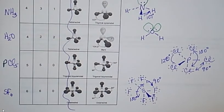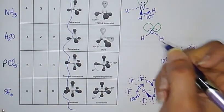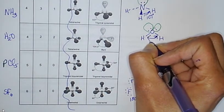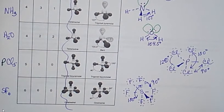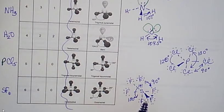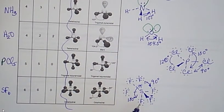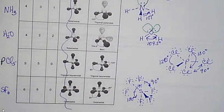Before we conclude, I want to go back and include the angle for the bent shape. For water, the angle between the two hydrogens is 104.5 degrees. This concludes our lecture on shapes of molecules. I hope this helped you understand and visualize how these shapes look. It's always a good idea to draw the Lewis dot structure first, and if you can start drawing the Lewis dot structure into these molecular shapes, you should be able to see how these shapes actually form around the molecule.